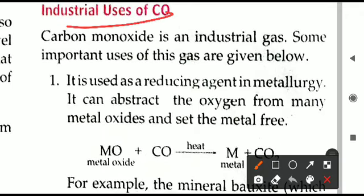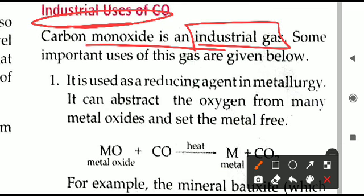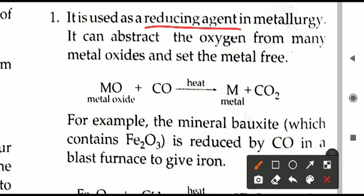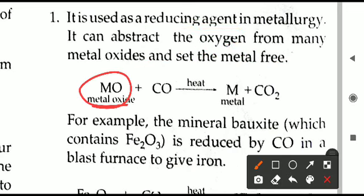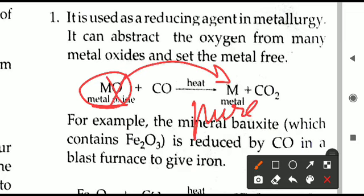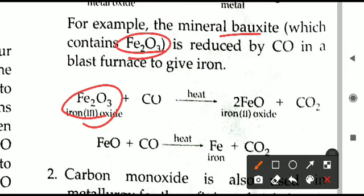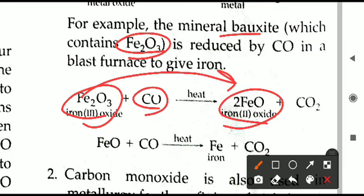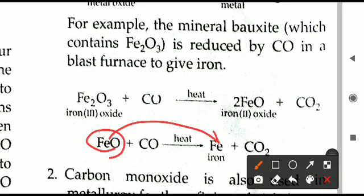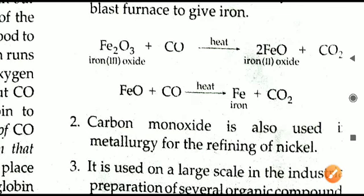Now let us see the industrial uses of carbon monoxide. First, it is used as a reducing agent in metallurgy — it removes oxygen from metal oxides. For example, iron ore Fe₂O₃ is reacted with carbon monoxide: Fe₂O₃ is first converted to FeO, and then FeO in the presence of carbon monoxide is converted to pure iron. So carbon monoxide acts as a reducing agent to obtain pure metals.